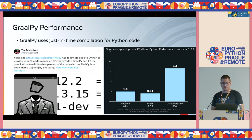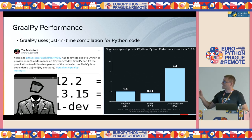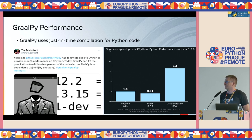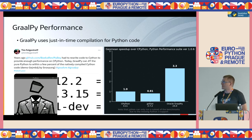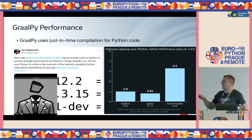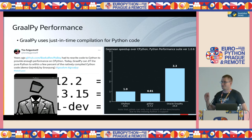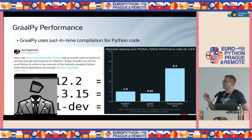GraalPy performance: GraalPy uses just-in-time compilation for Python code. To illustrate this, the PyBoy application had been rewritten in Cython to provide enough performance on CPython. But if you run the original pure Python code on GraalPy, it happens to be within a few percent of the performance of the natively compiled Cython code running on CPython. Cython is like C with Python syntax — it allows you to quickly port Python code to C. So basically we are comparable to C code here in this case.